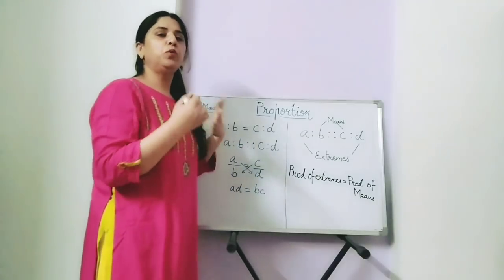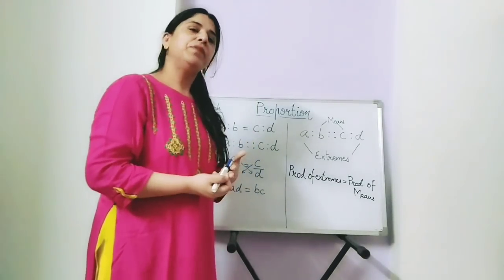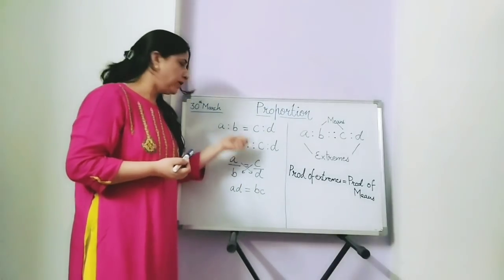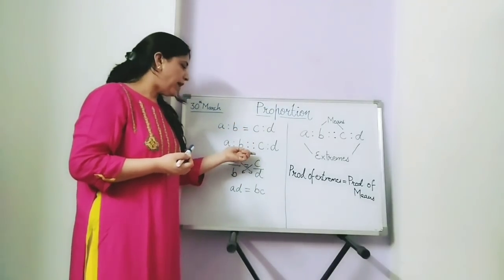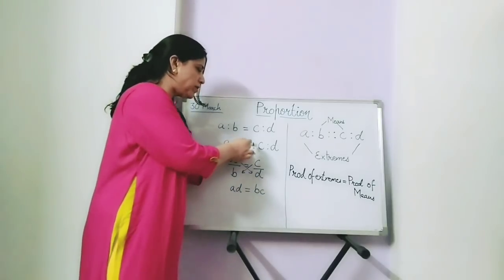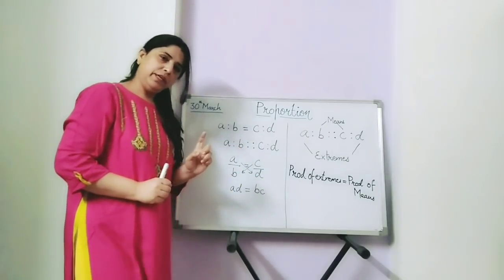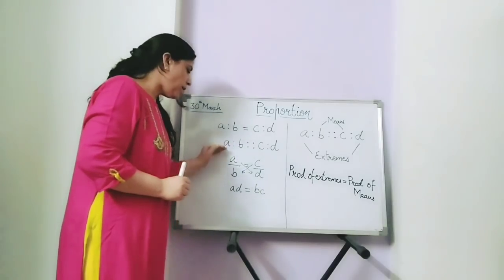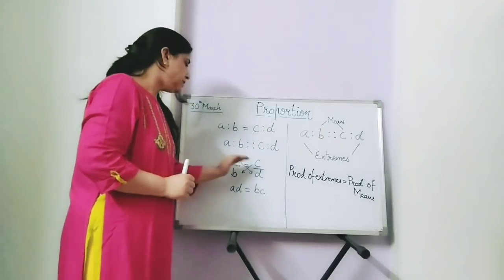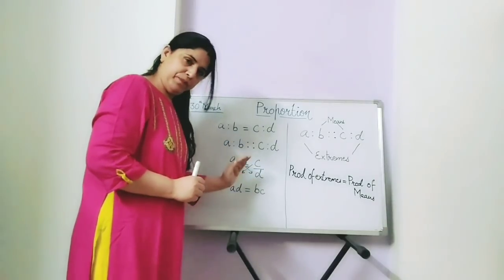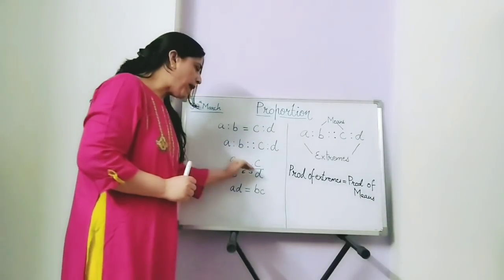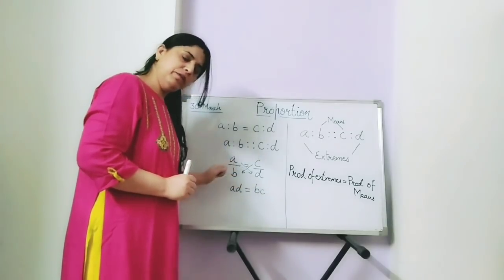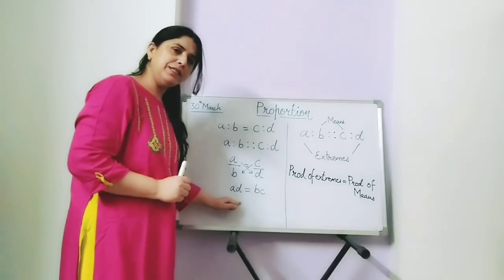What is proportion? When two ratios are equal, they are said to be in proportion, and the proportion sign is denoted not by the equal sign but by four dots in the square form. Now A ratio B can also be written as A upon B is equal to C upon D. By cross multiplication, A into D is equal to B into C, that is AD equals BC.